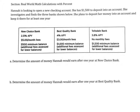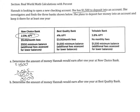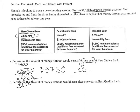Now we're looking at real-world math calculations with percent. Determine the amount Hannah would earn after one year at New Choice Bank. She deposits $1,500 and the APY is 2.5%. So we do $1,500 × 0.025. Working through the multiplication with three decimal places, she earns $37.50 in APY. But there are $5 monthly fees, so 12 × $5 = $60 in fees for the year.